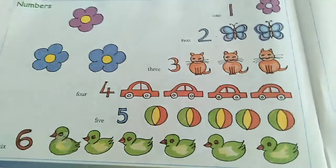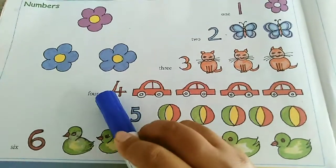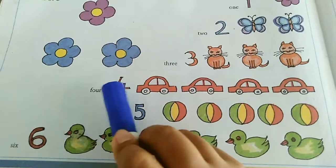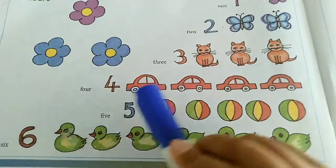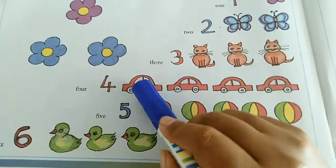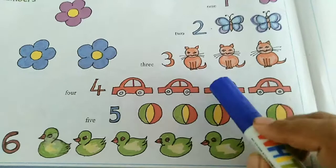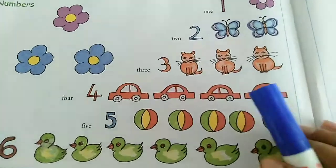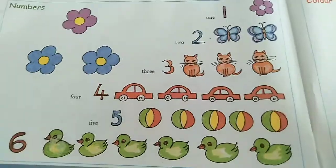Let's go to the next number. Number 4. There are four cars here. Count and see. One, two, three, four cars. Very good. Now let's move on to the next number.